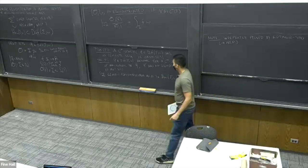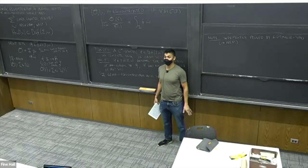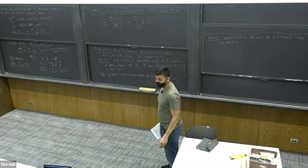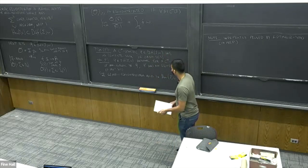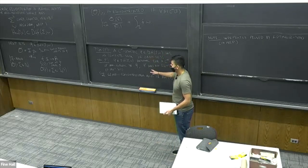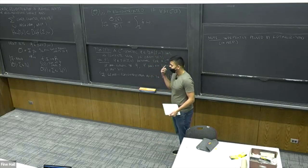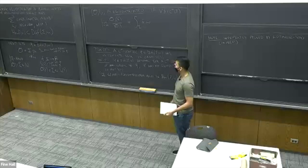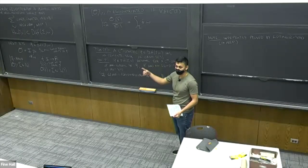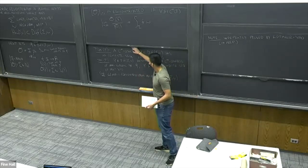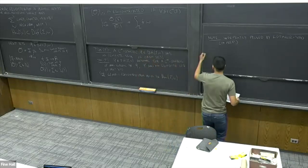Does anybody have any questions about the statements or the basic setup? That's a good question. From some algebraic argument, you can't directly show that you have a sequence of periodic orbits which equidistribute in that sense, but you can show there's a sequence of equidistributed periodic orbits in some kind of Cesaro summation sense.